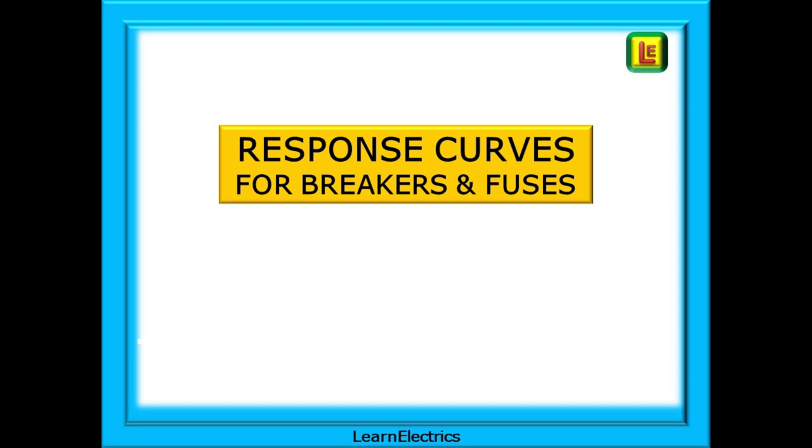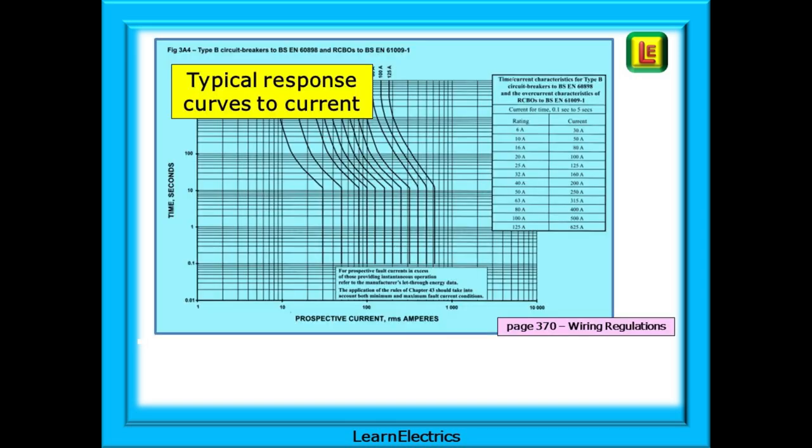We must look at the response curves of circuit breakers and fuses next since it is the response curve that determines what type of overcurrent the breaker is actually looking at. The response curve dictates if the breaker operates immediately or whether it can take its time and trip after 10 minutes or so. This is a typical response curve taken from the wiring regulations book. Each type of fuse or breaker will have their own page and each rating of fuse or breaker will have its own curve. These are the curves that all manufacturers will make a breaker work to. It is their standard. Let's simplify this.